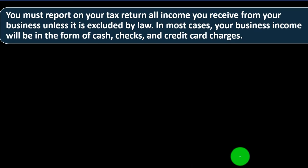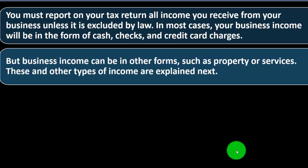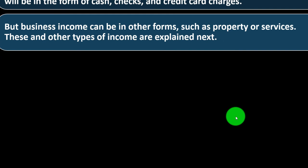You must report on your tax return all income you receive from your business unless it is excluded by law — that's the general rule, just like for income in general. In most cases, your business income will be in the form of cash, checks, and credit card charges. However, you could receive payments in other ways, such as a barter transaction. Don't think barter is a way to avoid income — you still have an income situation there. Business income can also be in other forms, such as property or services.